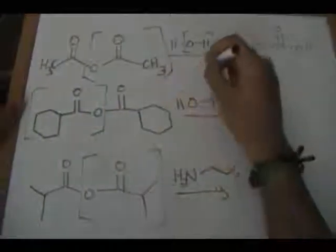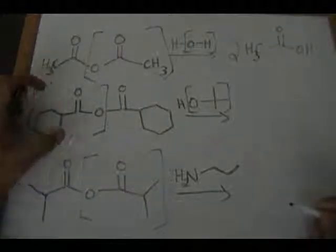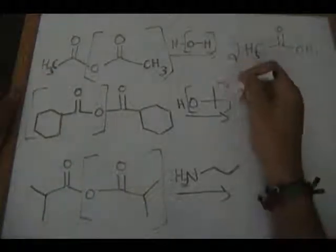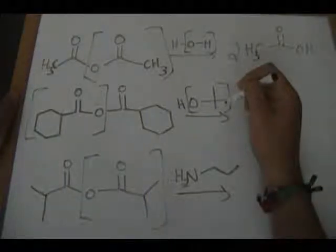The next reaction: we have a symmetrical anhydride reacting with a tertiary alcohol. All I would do is replace this piece I have here in brackets, which will become your carboxylic acid, with this piece I have here in brackets. We're using techniques that I've shown you already - this is a tertiary alcohol.